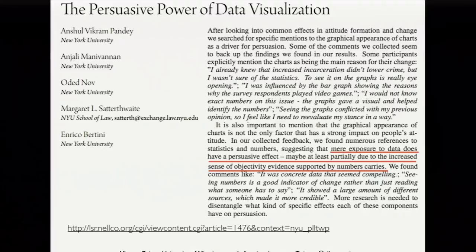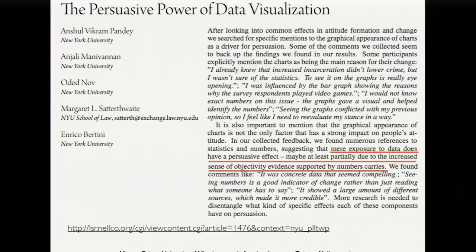Researchers conjecture this may be because we tend to equate numbers with objectivity, and numbers and graphics with science. Once you put a very complex graph in any document, that document suddenly feels more scientific and we tend to trust it a little bit more. Even more troubling, some researchers have found it doesn't really matter whether the chart has anything to do with the content of the writing — as long as you put a chart there, even if completely unrelated, the written message becomes more persuasive for some reason.